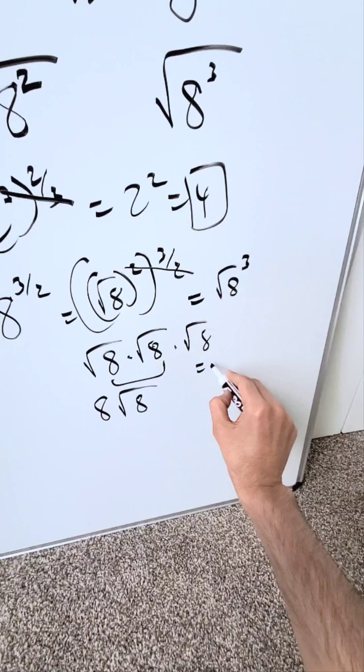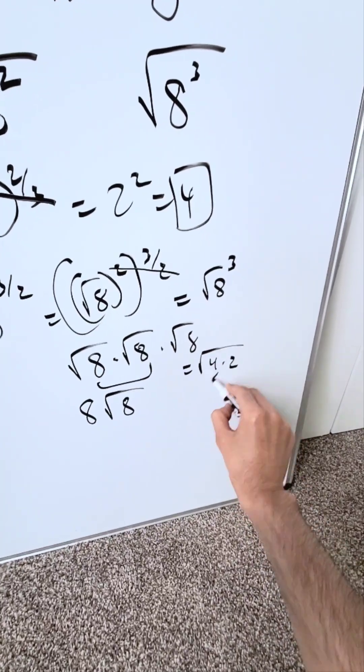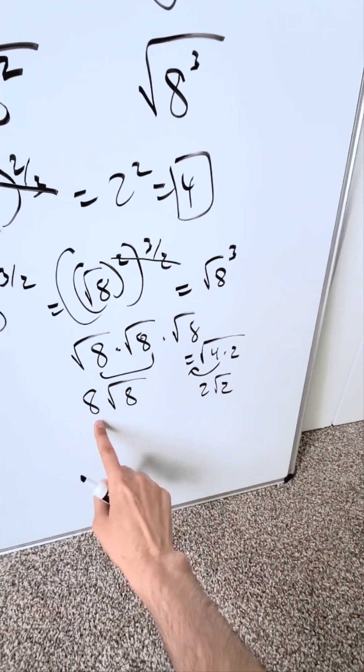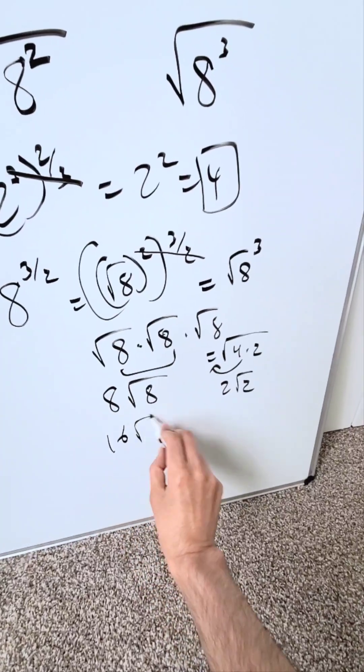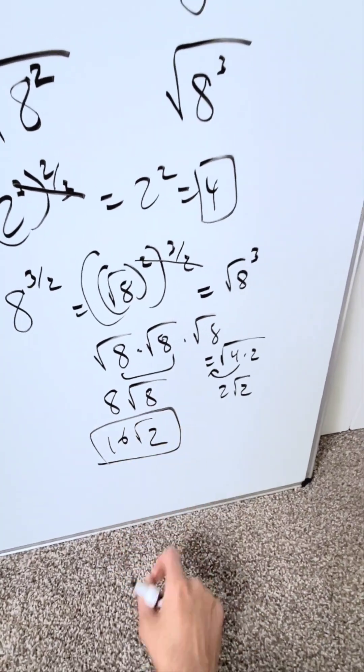You know root 8 is equal to here a 4 times 2. The 4 comes out as a 2. You have a 2 root 2. Combine this with that 8, you'll have a 16 root 2 and that right here will be your end result.